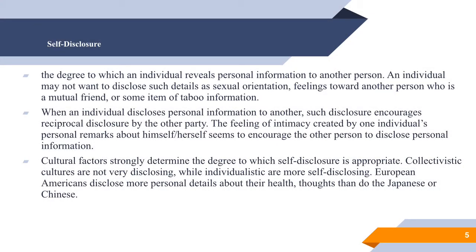Self-disclosure is defined by the degree to which an individual reveals personal information to another person. An individual may not want to disclose details such as sexual orientation, feelings toward a mutual friend, or taboo information. Imagine a university student disclosing that he or she was sexually abused as a child, or a gay man or woman coming out of the closet. Such topics are generally not considered acceptable in casual conversation because of social taboos, though individuals may consciously break their silence as a political act to change those taboos.